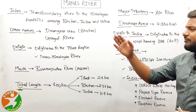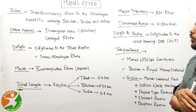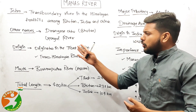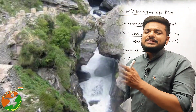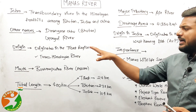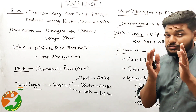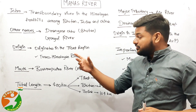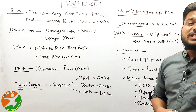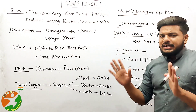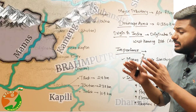The Manas River originates in the Tibet region, which is part of China. It is a trans-Himalayan river — you must remember that this is a trans-Himalayan river. The mouth of this river is where the Manas River merges with the Brahmaputra River.